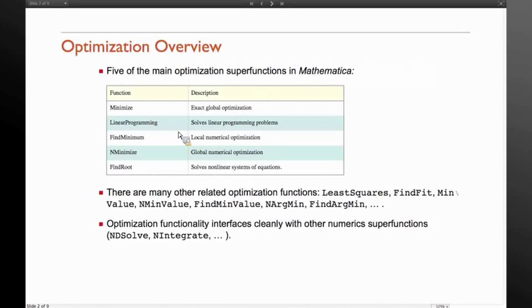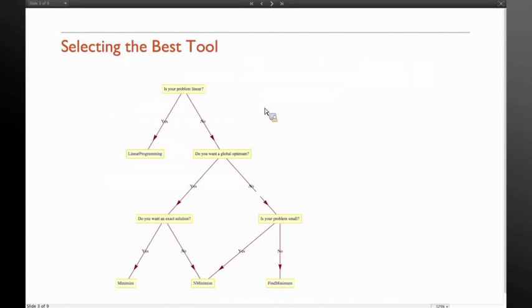There's a lot of overlap between these functions. So FindMinimum and NMinimize can both solve constrained optimization problems, so it's important to pick the proper tool for your optimization problem. I don't know if I'll go through this whole decision chart, but this is in the documentation. It's good to sort of think about your problem before you pick the tool in Mathematica. If your problem's linear, you want to use linear programming. If you need a global optimum, you should use NMinimize or possibly Minimize. And if you just want speed and local optimum is okay for you, FindMinimum is probably the proper tool.